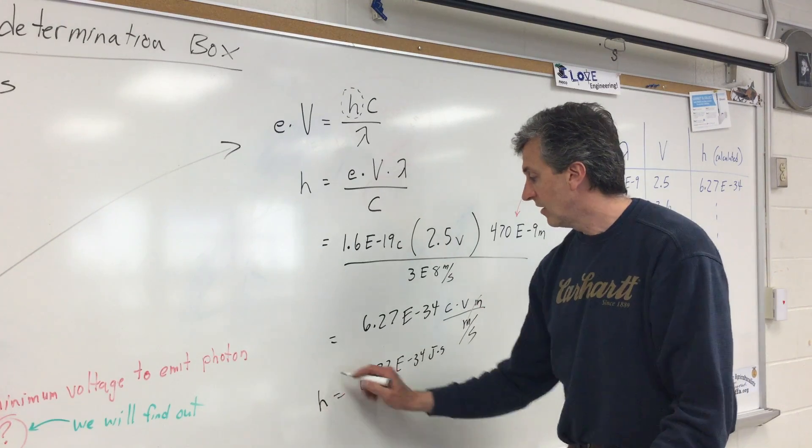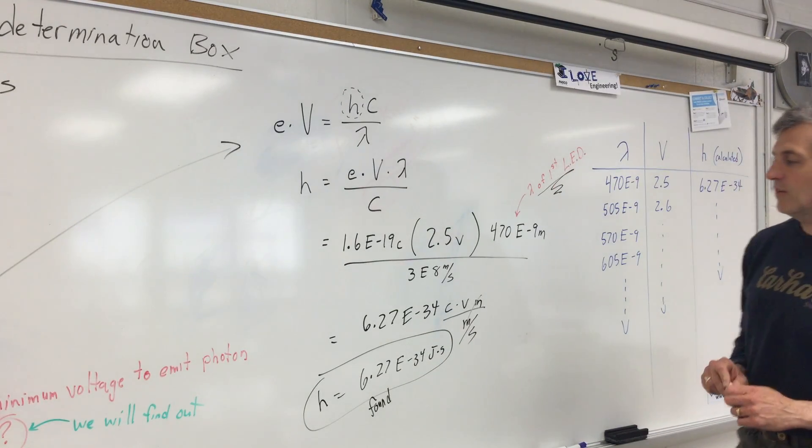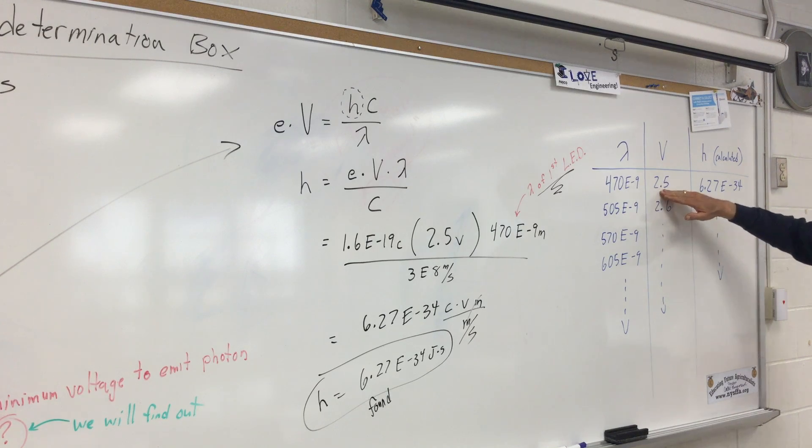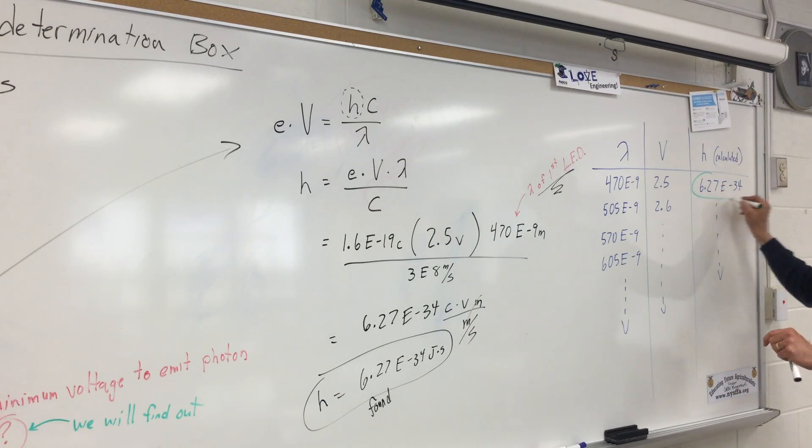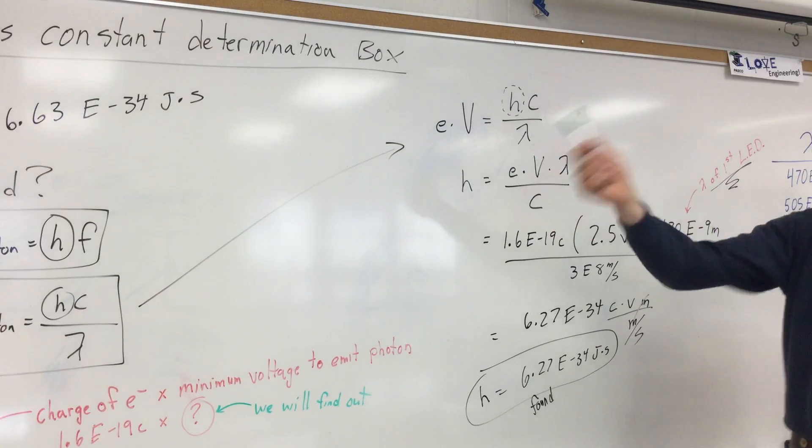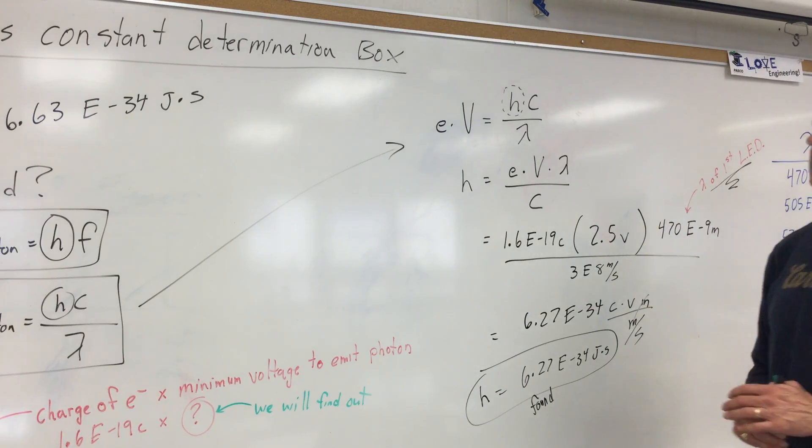So what we have found, this is what we found, we found that in our case, we think Planck's constant is 6.27 E negative 34 joules seconds. So for 470 nanometer light, 2.5 volts got the light to turn on, boom, that's what we calculated. Now how far off is it? Well we could do a little percent error if we wanted to, but just take a look. This is 6.27 E negative 34. The original Planck's constant was 6.63 E negative 34. And I can just tell you that that's not off very far because you're talking, you know, the decimal place has to move over 34 places.